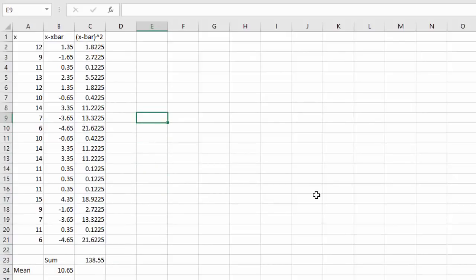Now the standard deviation is the square root of that divided by one less than the sample size. So we'll say equals sqrt for square root. I'll click that number. And we'll divide by one less than the sample size. I have 20 data values. So one less than that is 19. And when I hit enter we get the standard deviation of our sample.